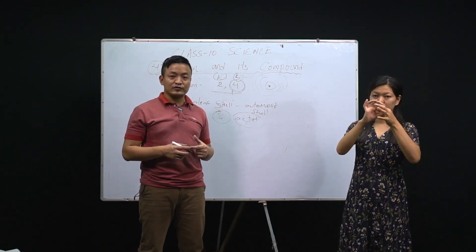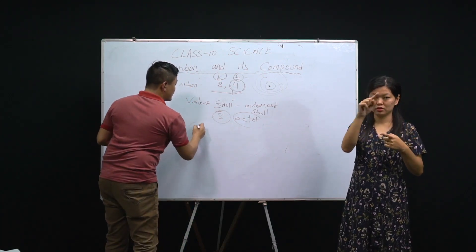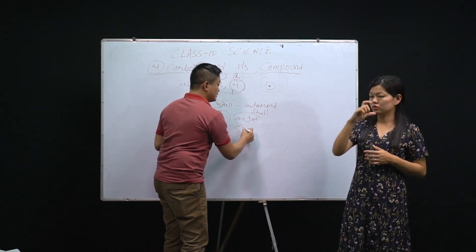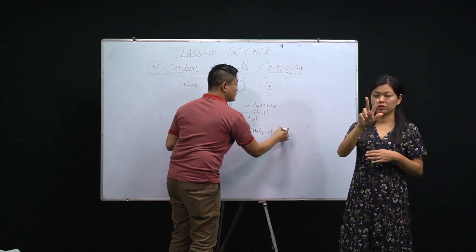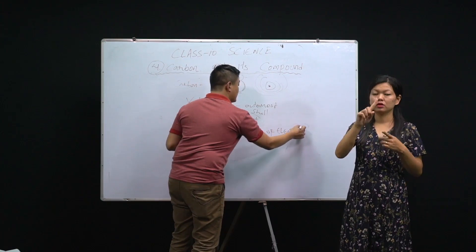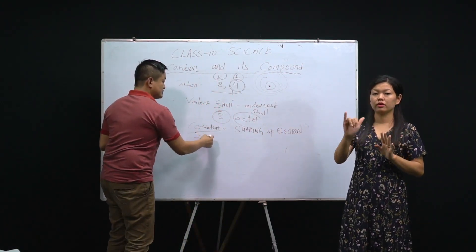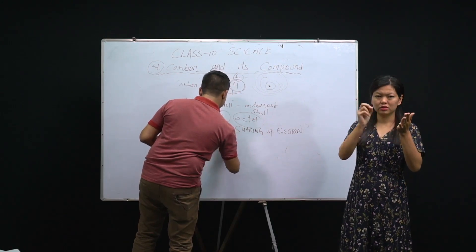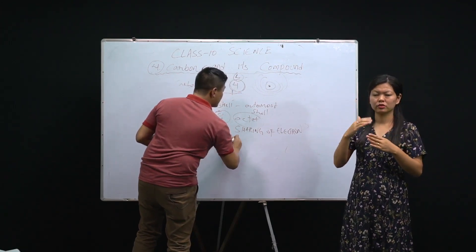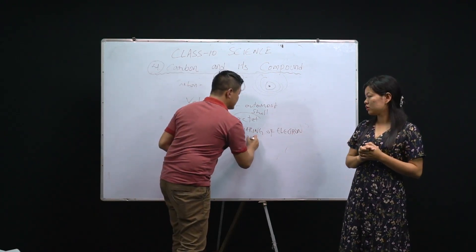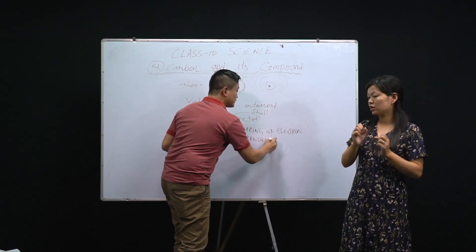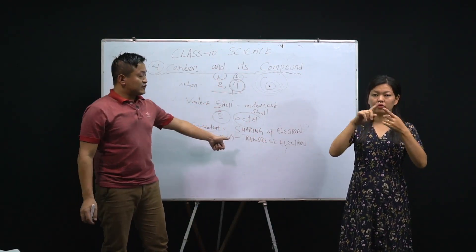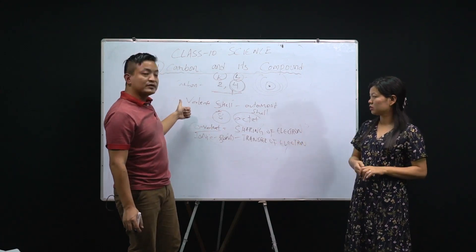Carbon forms a covalent bond. A covalent bond means a bond formed by sharing of electrons. We have studied about this in the metals and non-metals chapter. Ionic bond, on the other hand, means a bond formed by transfer of electrons.